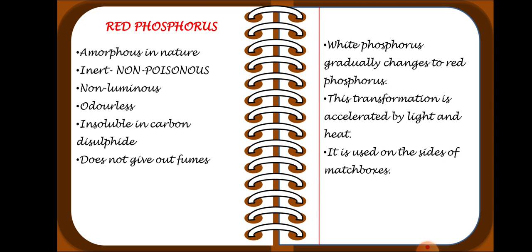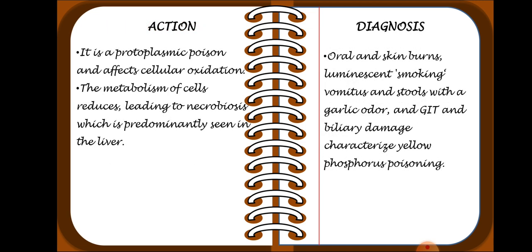Red Phosphorus is used on the sides of matchboxes. Regarding its action, Phosphorus is a protoplasmic poison and affects cellular oxidation. The metabolism of cells is reduced, leading to necrobiosis, which is predominantly seen in the liver.